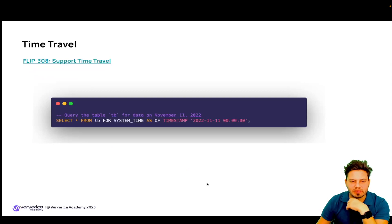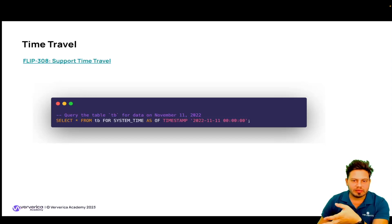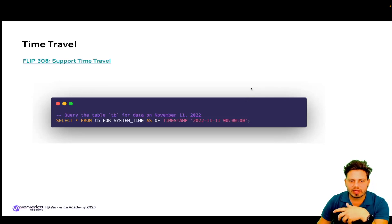The next feature is support for time travel. Flink as of 1.18 supports time travel SQL syntax for querying historical versions of data, allowing users to specify a point in time and retrieve the data and schema of a table as it appeared at that point in time. This lets users easily analyze and compare historical versions of data using a FOR SYSTEM_TIME AS OF statement.